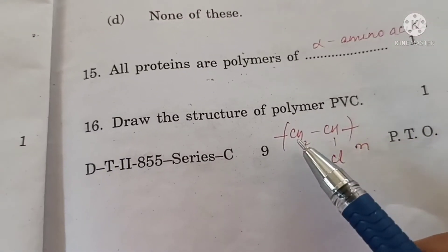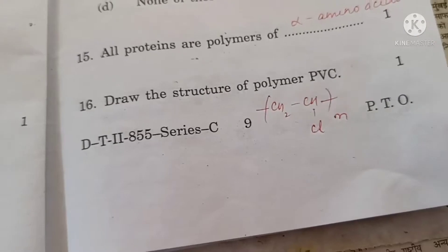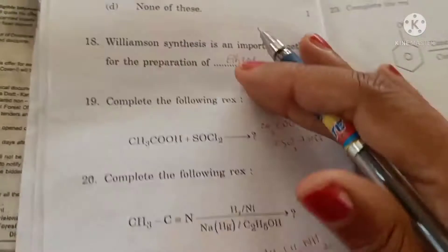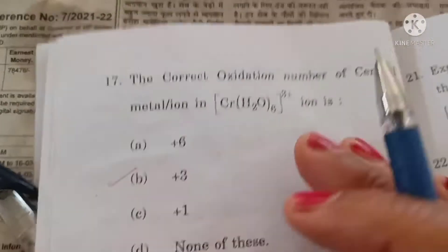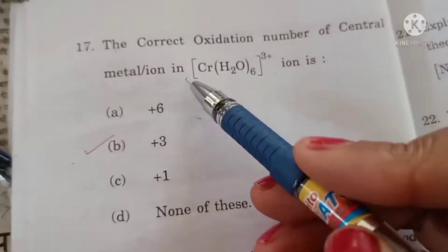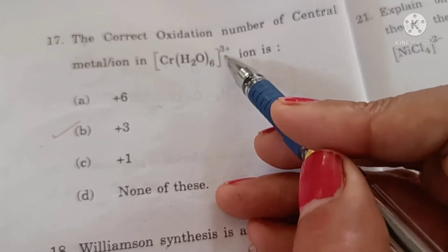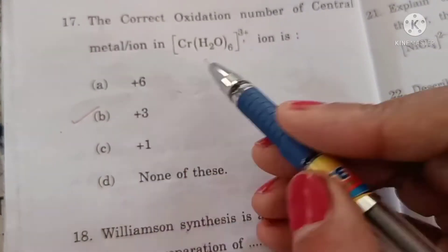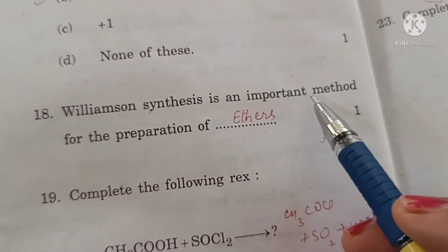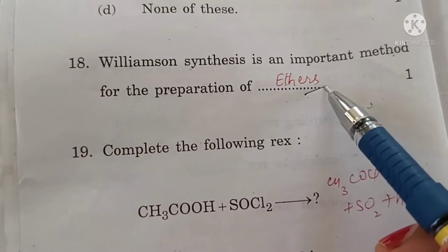The correct oxidation number of the central metal ion in hexaaquachromium is +3; the complex is neutral. Williamson synthesis is an important method for the preparation of ethers.